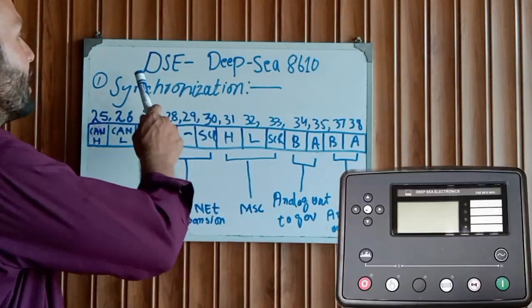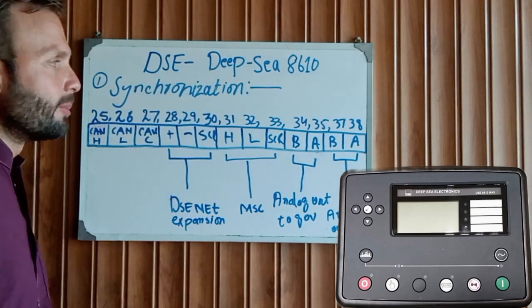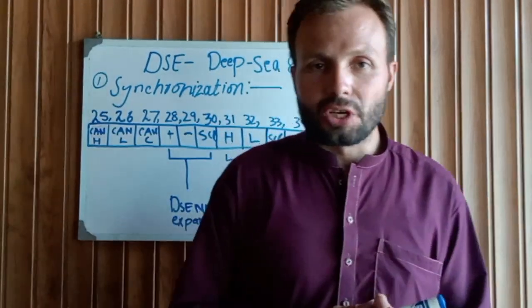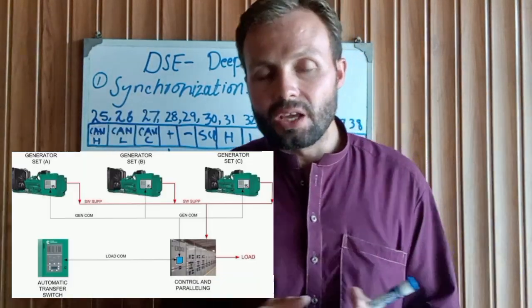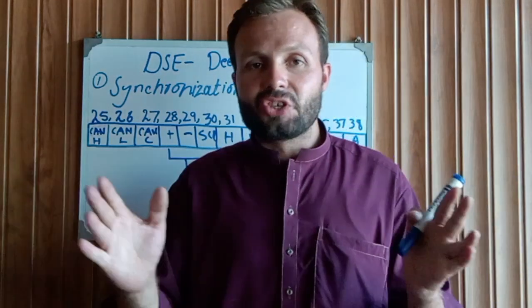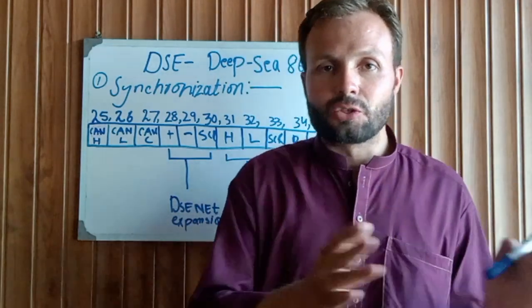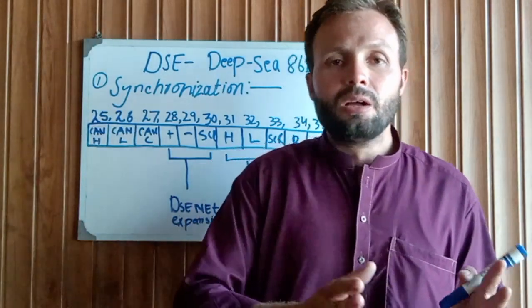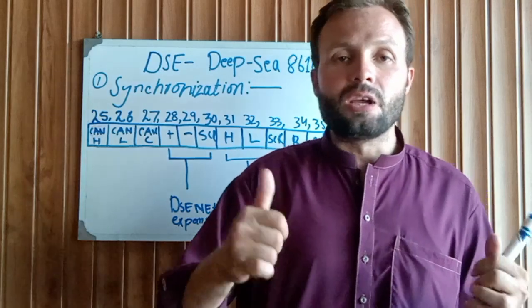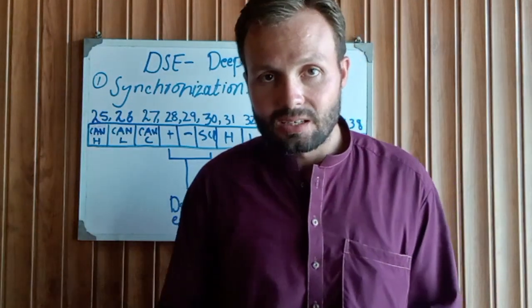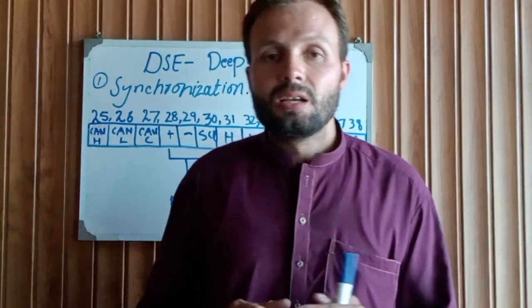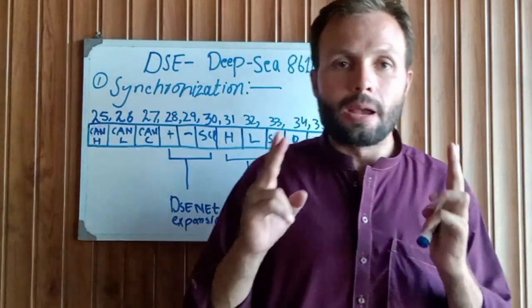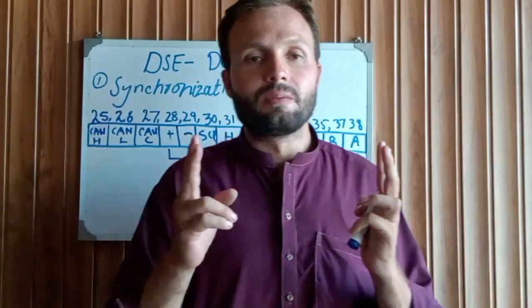Before starting the video, let me explain this controller overview. As you can see here, DSE-DFC controller model 8610. This controller is used to synchronize two or more generators in parallel operation to control the load of the building or industry. When you need to operate five generators in parallel, synchronize all generators to each other. When load is not available, the specific generator shuts down, and when load increases, the generator starts. This is used for synchronization operation.